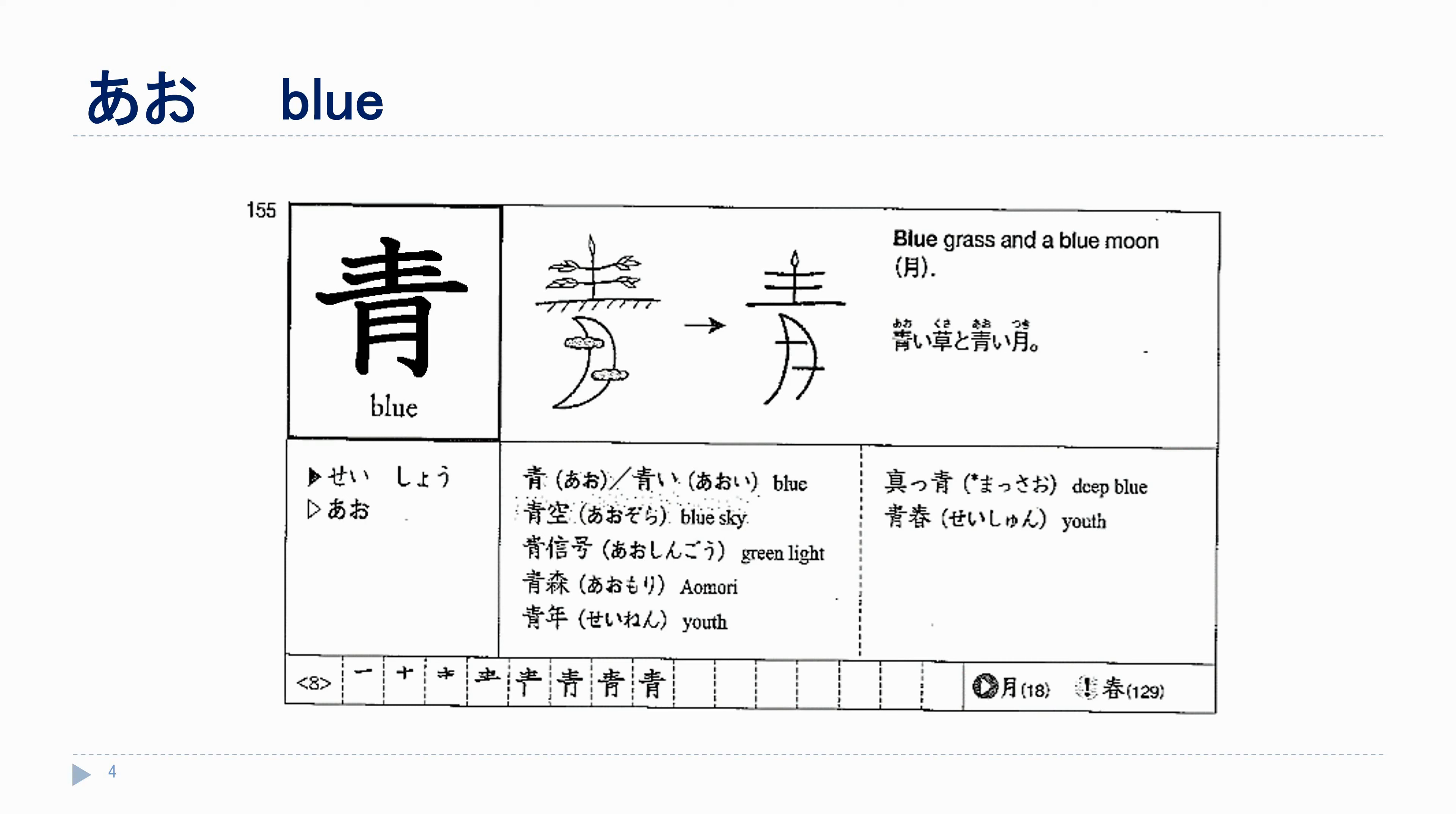Our kanji words with this kanji are 青い and also 青空. Be careful with the reading on this one. Putting the two words together changes the so in sora to a zo. So we have aozora.